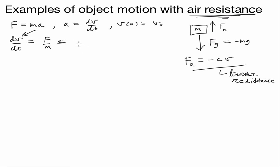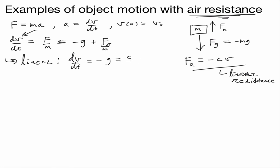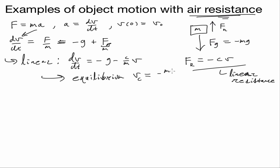We can write the differential equation dv/dt equal to negative g minus C over M times V. This differential equation has an equilibrium — the critical point we call the terminal velocity — equal to negative Mg over C.